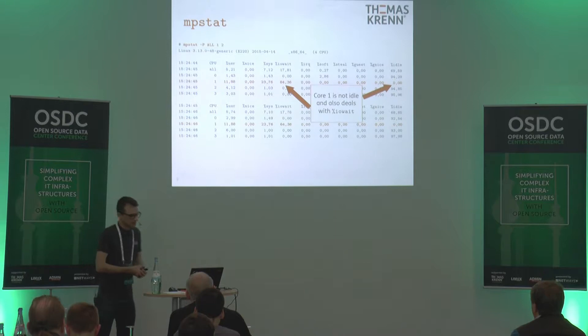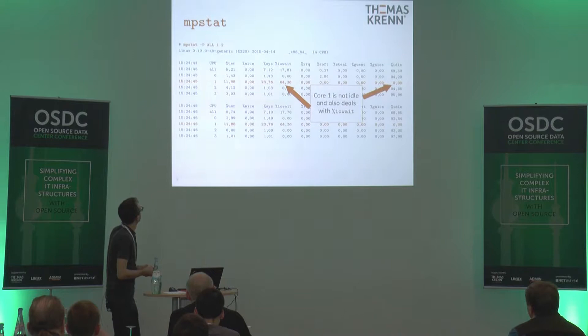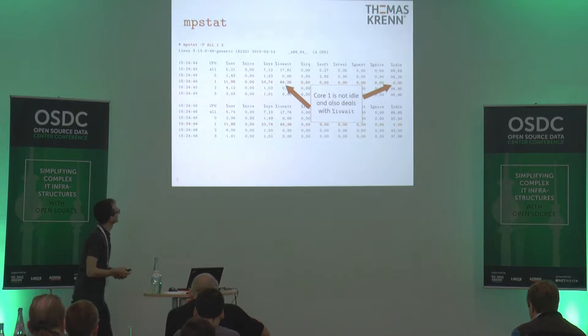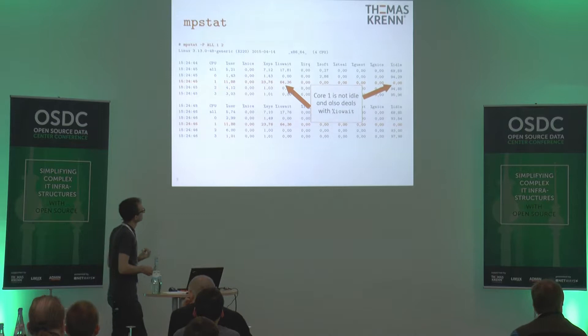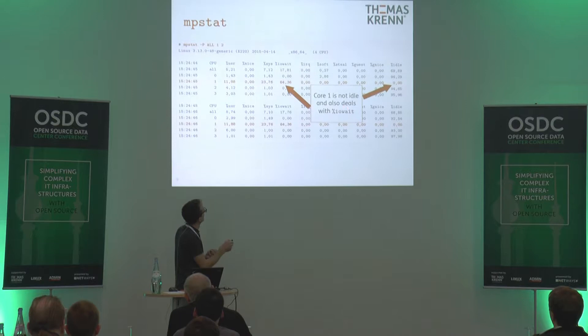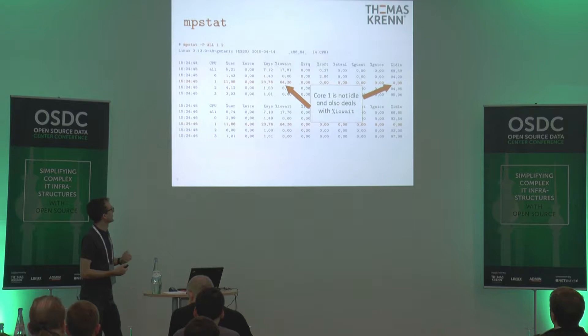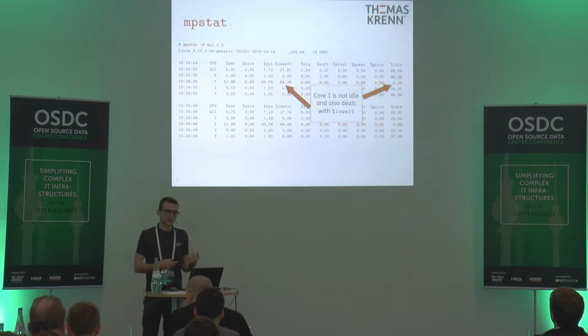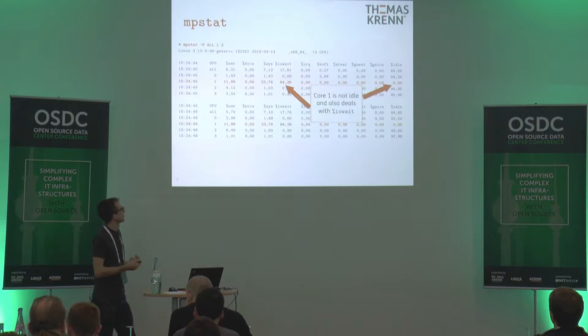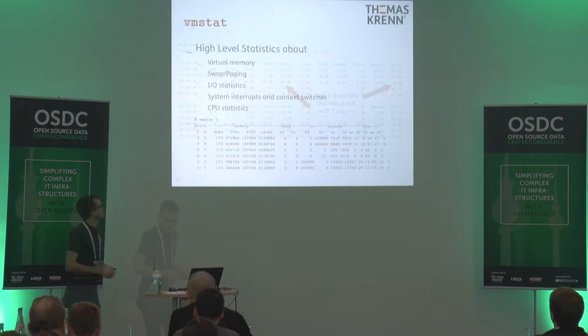Let's take one step further to VMSTAT. Here we see some more high-level statistics about different topics: virtual memory, swap and paging, IO statistics, system interrupts and context switches, and also CPU information. We have user CPU time, system CPU time, idle time, and so on. ST is the so-called steal time — this is stolen from a virtual machine. We have no virtualization here so we don't see any output in that column.